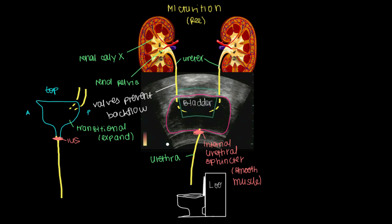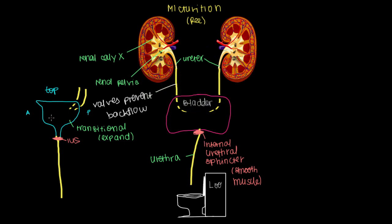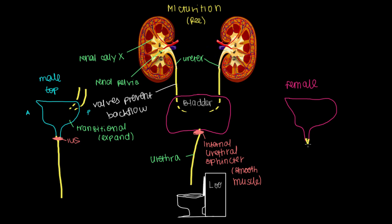Going back to the diagram, we focus on what happens once urine leaves the bladder and goes into the urethra. The urethra conducts urine to the outside world — it's the organ we use to pee. But the path from the bladder to the bathroom is very different in men versus women. The female bladder leads into a female urethra that has the same general setup, with an internal urethral sphincter.